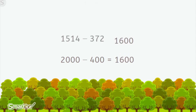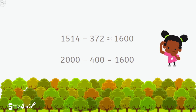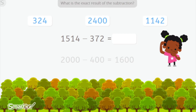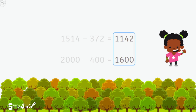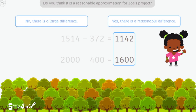Nice job. 1,600 is the estimated result of 1,514 minus 372. Since Zoe is very curious, she wants to know the difference between the exact result and the estimation. The exact result of the subtraction is 1,142. When comparing the results, the difference between 1,600 and 1,142 is pretty big, so this is not a reasonable approximation — there is a large difference.